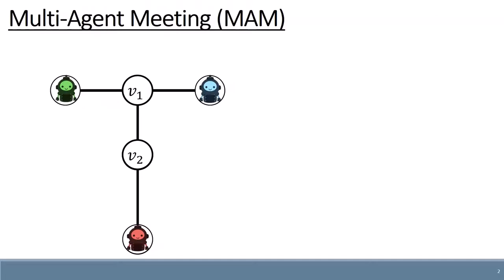In the multi-agent meeting problem, we have a map and k agents, each with a start location. The task is to find a meeting location for the agents.